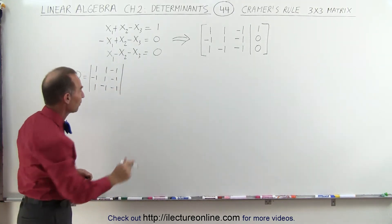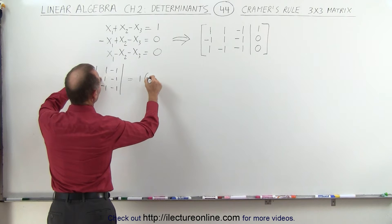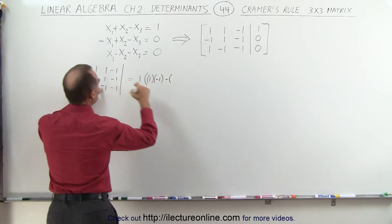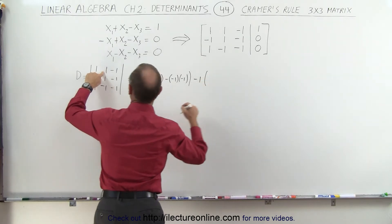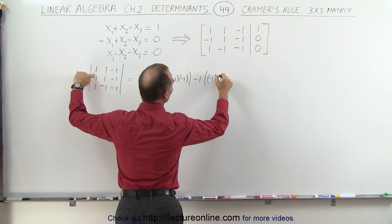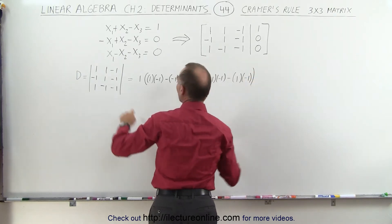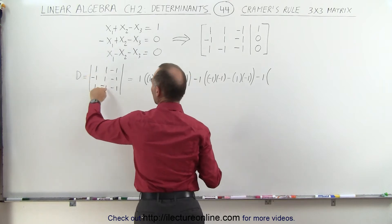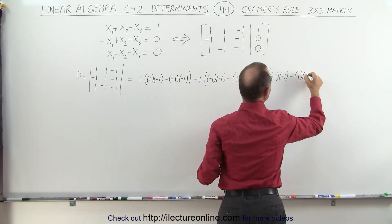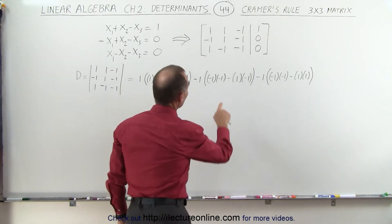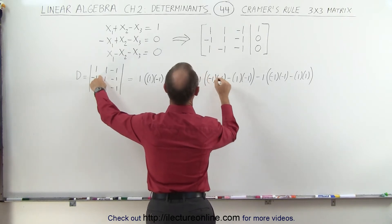We're going to find the determinant of this first. That's equal to taking the upper-left element 1 times (1 times negative 1 minus negative 1 times negative 1), then taking the negative of the second element times (negative 1 times negative 1 minus 1 times negative 1), and finally the third element negative 1 times (negative 1 times negative 1 minus 1 times 1). Working through: negative 1 minus 1 is negative 2; plus 1 minus negative 1 gives plus 2, times negative 1 is negative 2; and 1 minus 1 is 0.